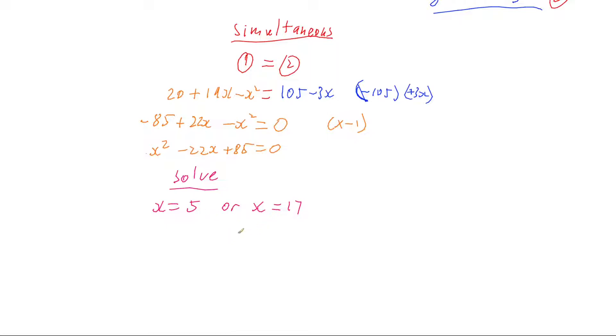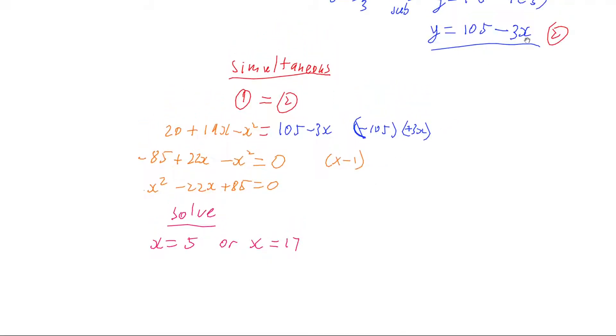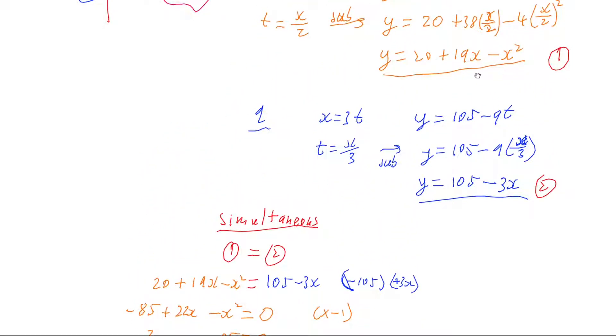So we got two solutions so that means that the paths do cross, we just need to know where. We've got half the answers, they cross at x equals 5 and x equals 17. I just need to know the respective y's. Now I conveniently have a recipe for y if I know x.